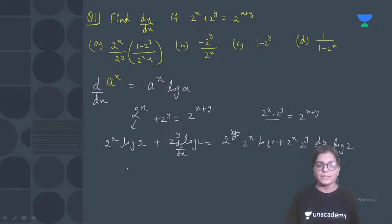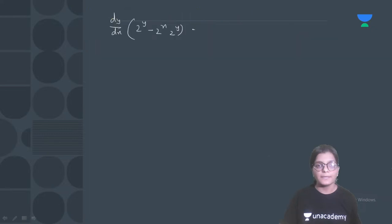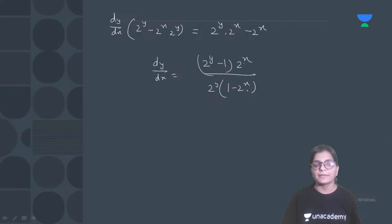After rearranging, moving terms to one side, we get: dy/dx · (2^x · 2^y · log 2 - 2^y · log 2) = 2^y · 2^x · log 2 - 2^x · log 2. Simplifying, dy/dx equals: numerator 2^y · 2^x - 2^x (with 2^x common), and denominator 2^y · (1 - 2^x). Looking at the options, we can take minus common to match the given answer choices.